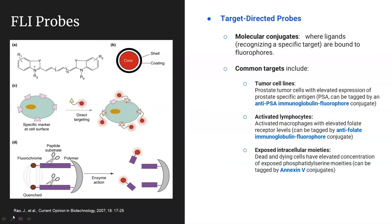While quantum dots are a particular type of target-directed probe, most target-directed probes in general are constructed out of small molecular ligands tethered to a fluorophore. Once injected, this construct will bind to the antigenic site that the ligand is specific for. There are many examples that are available commercially. I've included three particular examples here to clarify their utility.